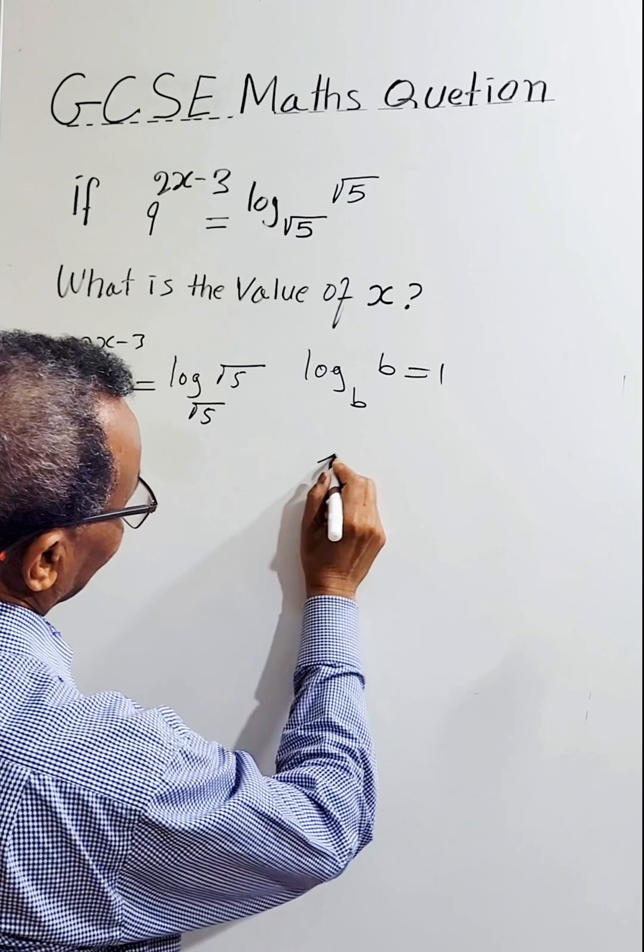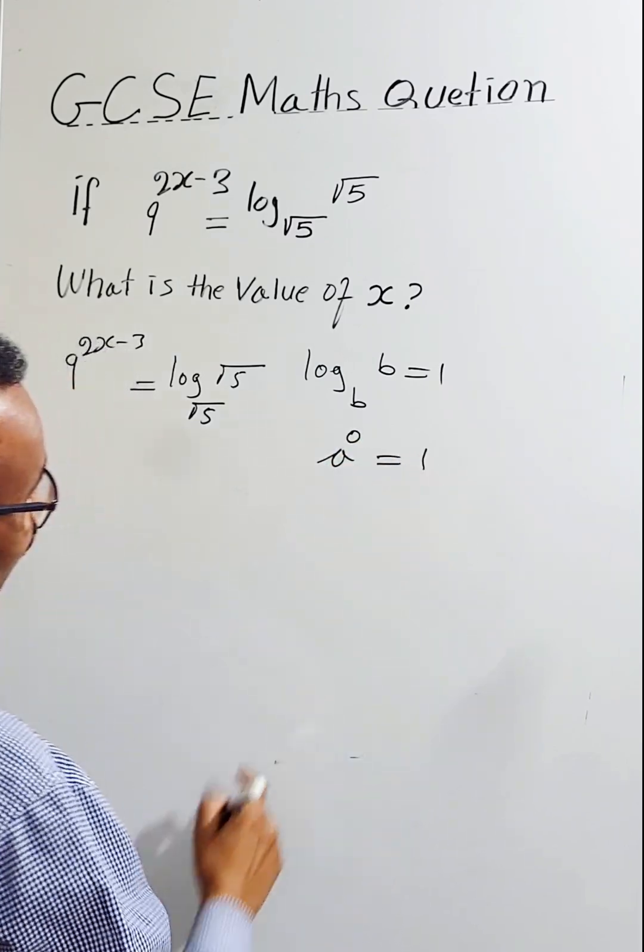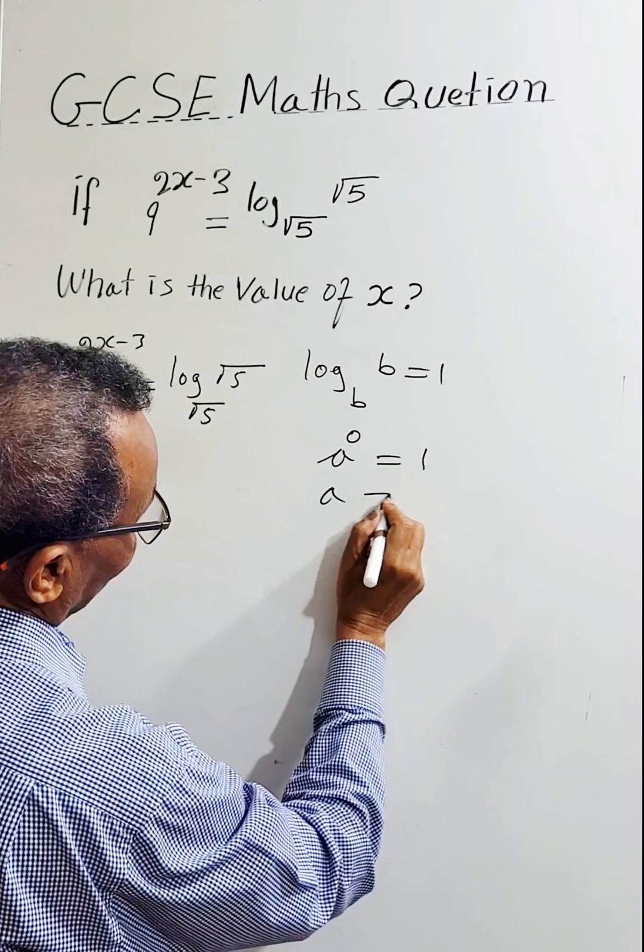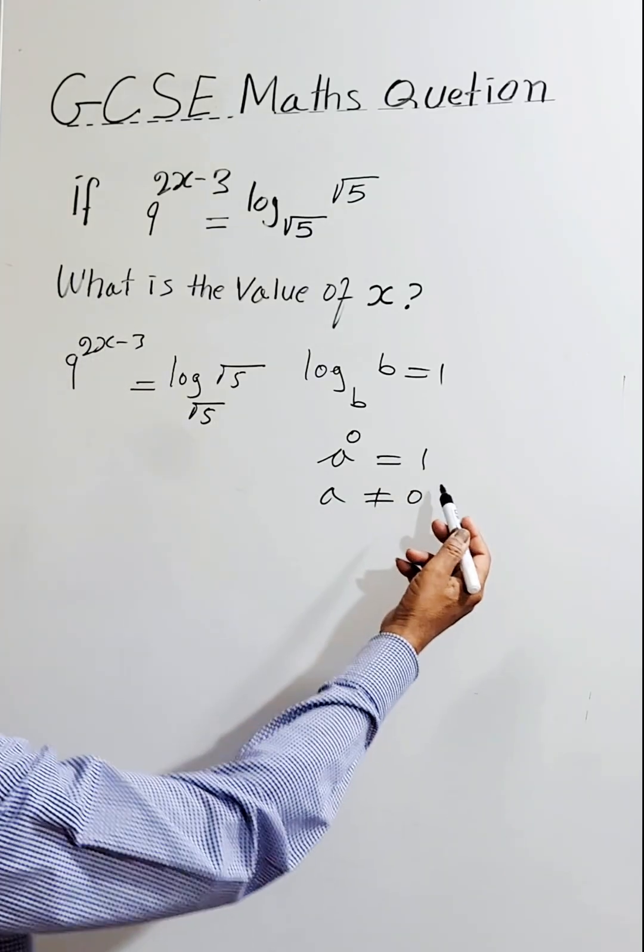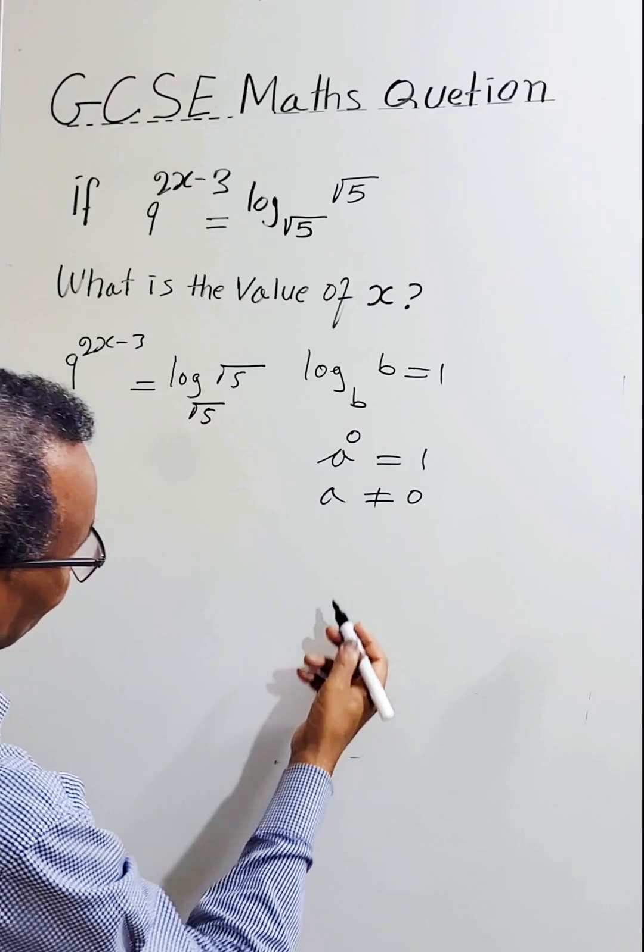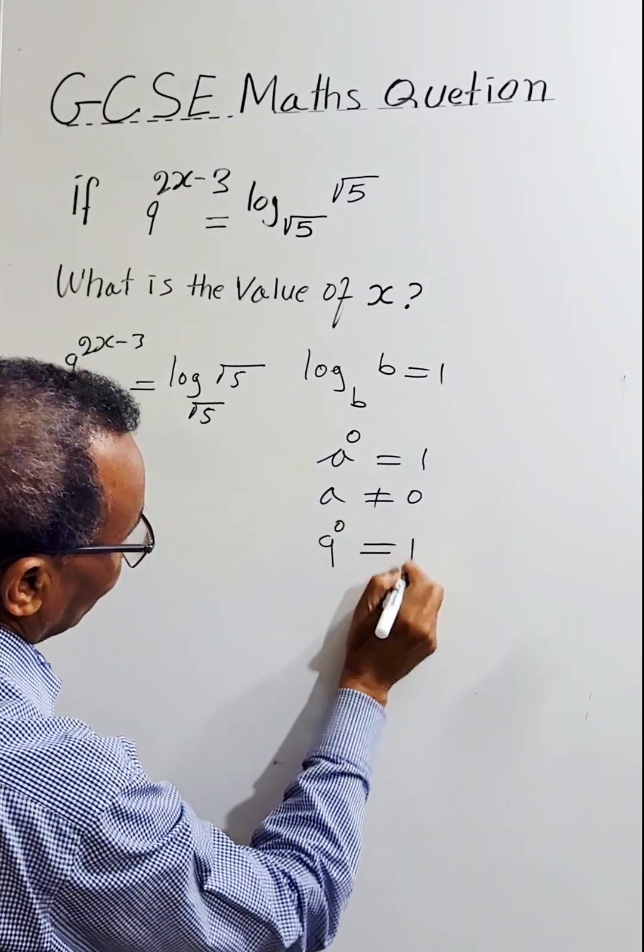You know a number to the power of 0 equals 1, where a not equal 0. So 1 can be written as a number to the power of 0. For example, 9 to the power of 0 is 1.